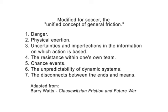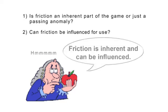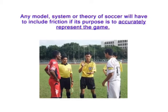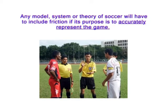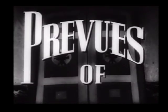From this taxonomy, we can generate two important questions. First, is friction a structural feature of the game or simply transitory? And second, is friction subject to controls? Considering there are no theories, systems, or models of the game that can eliminate people or chance, we have to conclude that friction is inherent and cannot be eliminated from the game.